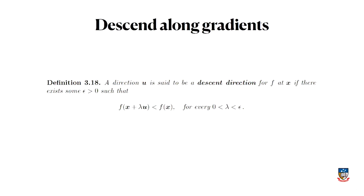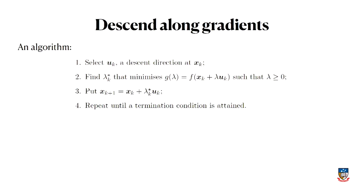We need a couple of definitions. What do we mean by a direction that's heading downhill — what's a descent direction? Mathematically, some direction u — a vector u pointing in some direction — is a descent direction if you start at a point x and take some step in the direction u, i.e., x plus lambda·u, and you end up lower than f(x). That's the formal definition. We need it for proving things and it crops up in theorems.